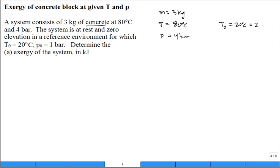The dead state temperature is 20 degrees C, which is 293 Kelvin. And the dead state pressure is 1 bar, which is 100 kilopascal. We want to calculate that exergy, the current property known as exergy, in units of kilojoules for this concrete block.